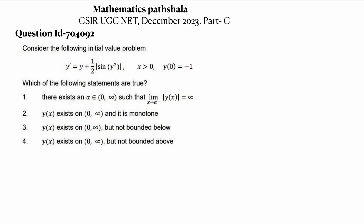Hello everyone, welcome to Mathematics Pastella. This is Norris. Today I will discuss this problem which came in CSIR UGC NET December 2023, Part C. Consider the following initial value problem: y' = y + (1/2)|sin(y²)| for x > 0, with initial condition y(0) = -1. We have to find which of the following statements are true.